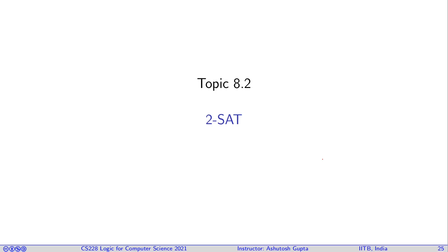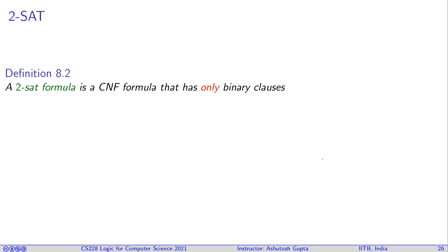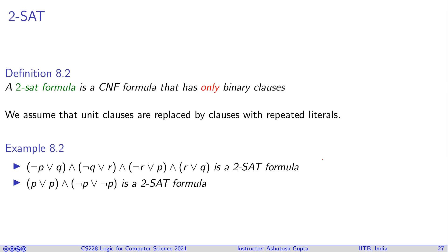Let us look at 2SAT formulas and how to solve any in linear time. A 2SAT formula is a CNF formula that only has binary clauses. We assume that unit clauses are replaced by clauses with repeated literals — for example, P or P — so that every clause has exactly two literals.